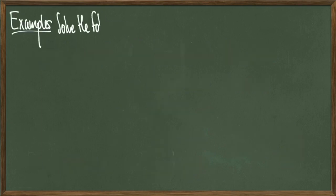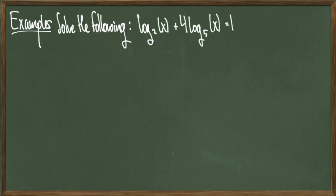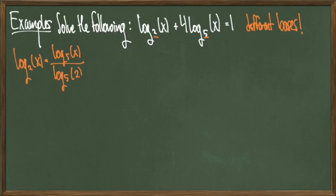Now for our last example, we'll solve an equation that has logs of different bases: log₂(x) + 4log₅(x) = 1. So what we're going to do is take log₂(x) and convert it into a log base 5 number. And we do this using our change of base formula.